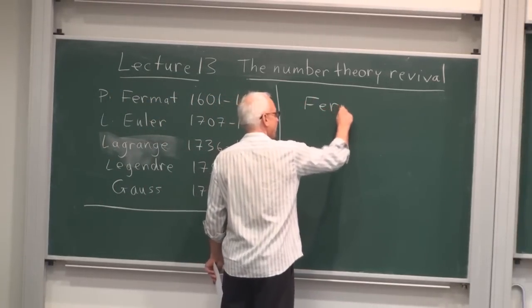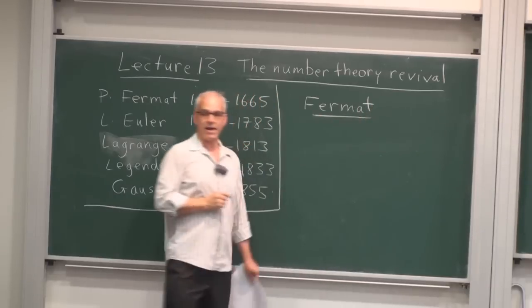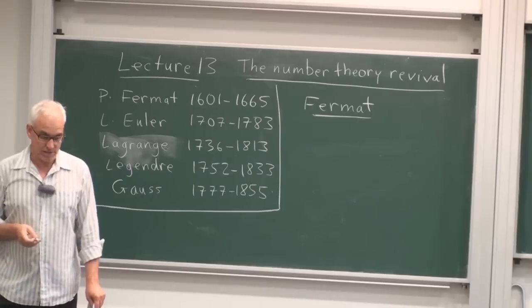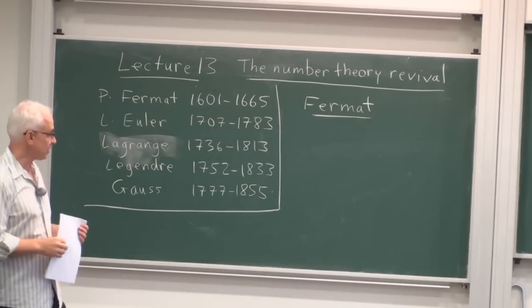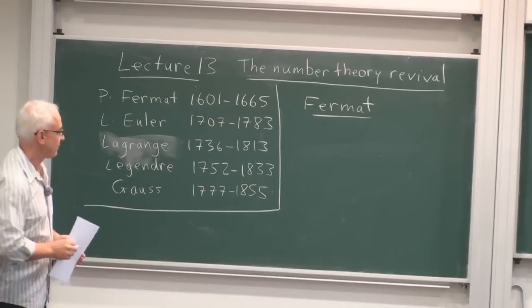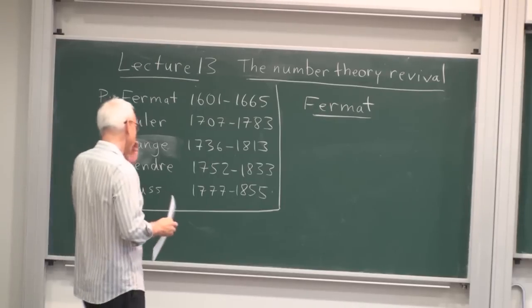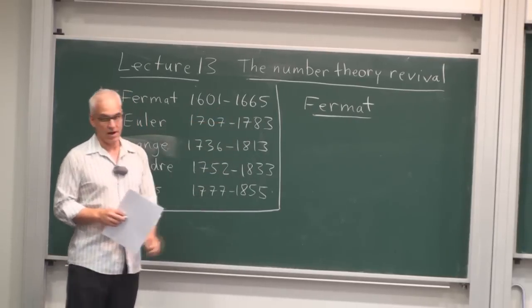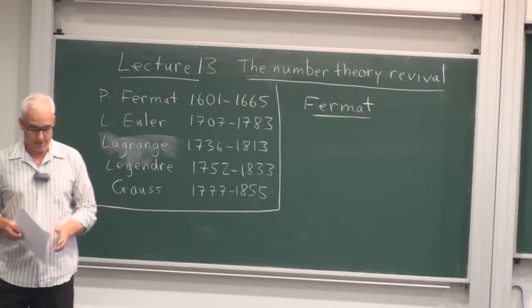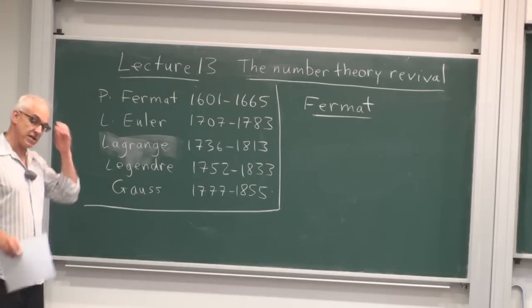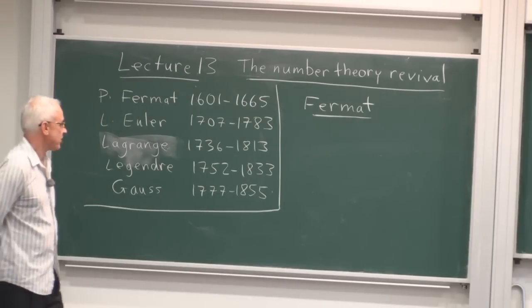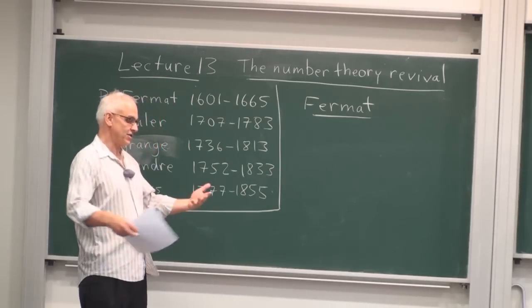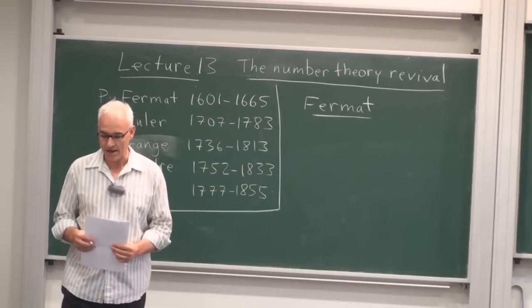And he's really the main instigator of setting up this theory of investigating arithmetical properties for their own sakes, and not necessarily connected with geometry. So Fermat is one of the towering figures of modern mathematics, and he's a very interesting fellow because he was not really a professional mathematician. He was a lawyer, and he lived in Toulouse, or near Toulouse in France, in the year 1601-1665.